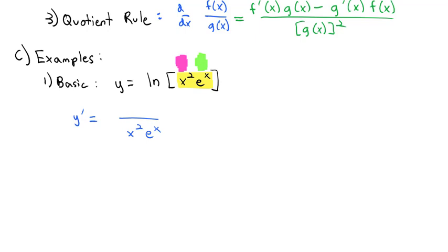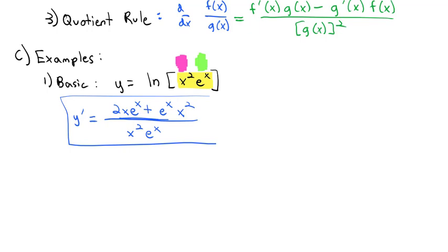So y prime — our derivative — the derivative of natural log is 1 over the stuff, so 1 over x squared e to the x, and then we multiply by the derivative of the inside. The inside is a product and ends up in the numerator. Doing the product rule on x squared times e to the x, we take the derivative of the first, 2x, times the second, e to the x, plus the derivative of the second — e to the x — times the first, x squared. And this becomes our derivative.